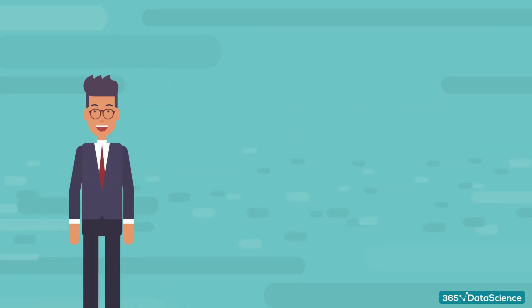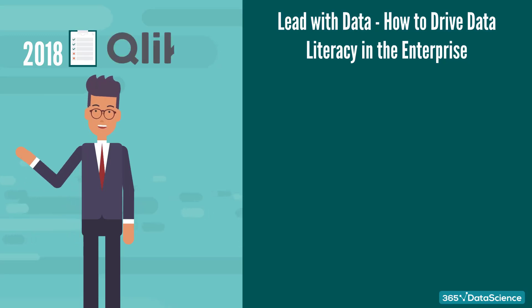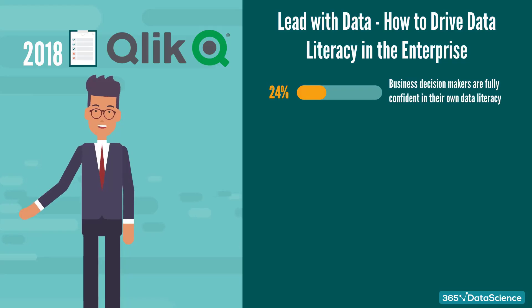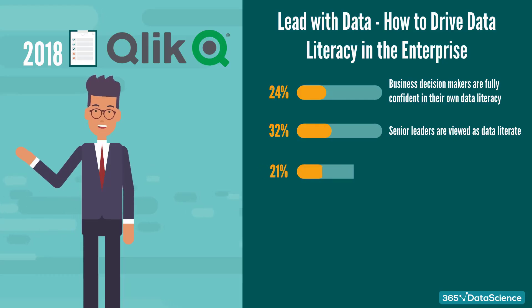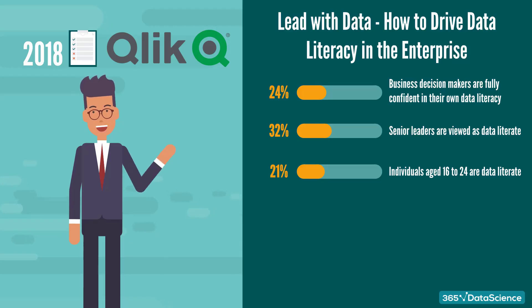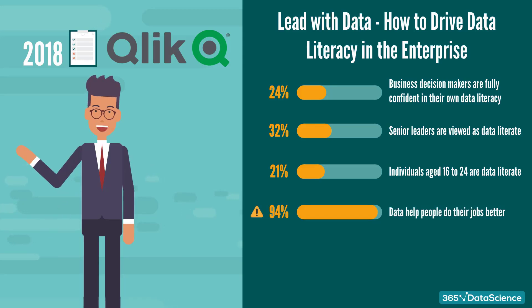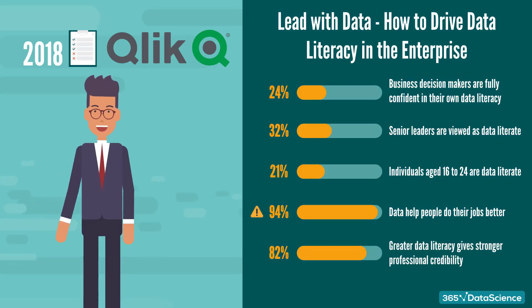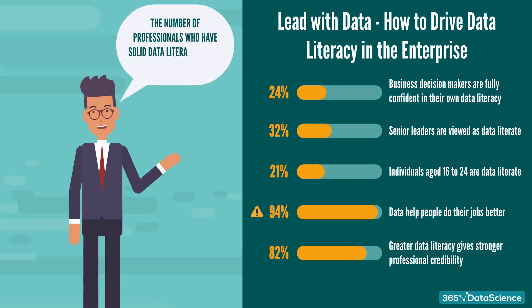A 2018 survey called 'Lead with Data – How to Drive Data Literacy in the Enterprise' by the software vendor Qlik showed that only 24% of business decision makers are fully confident in their own data literacy. In addition, only 32% of senior leaders are viewed by other people in their organization as data literate, and only 21% of individuals aged 16 to 24 are actually data literate. Without a doubt, the benefits of being data literate are insurmountable: 94% of respondents using data in their current role recognize that data helped them do their jobs better, and 82% of respondents believe that greater data literacy gives them stronger professional credibility. We can conclude that, although enterprise-wide data literacy is considered important, the number of professionals who have solid data literacy is still relatively low.